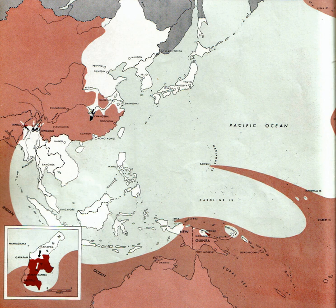On the 21st, Aachen is occupied by the U.S. First Army; it is the first major German city to be captured. On the 23rd–26th, the Battle of Leyte Gulf: the United States 3rd Fleet and the United States 7th Fleet win a decisive naval battle over the Imperial Japanese Navy in the Philippine Islands.